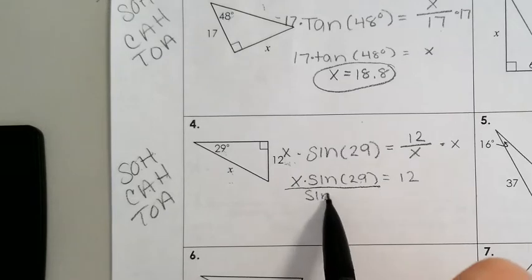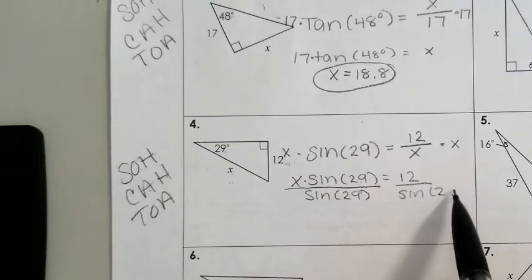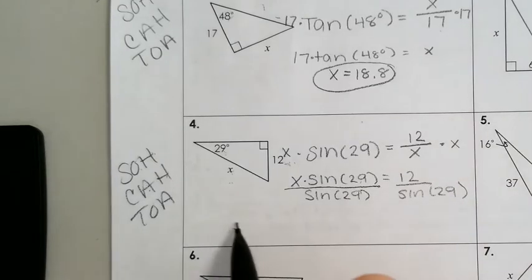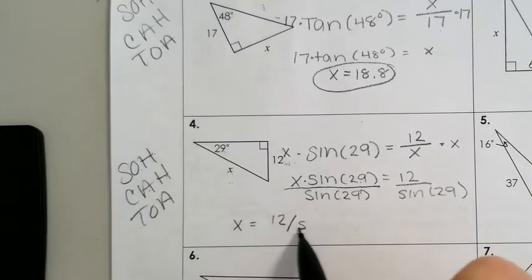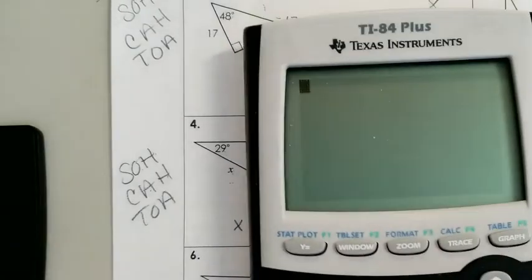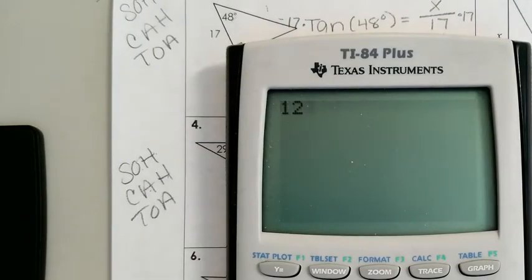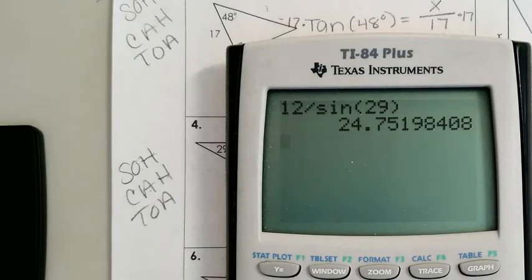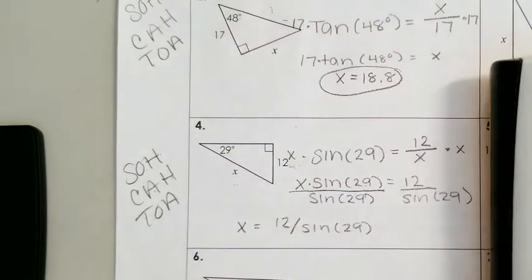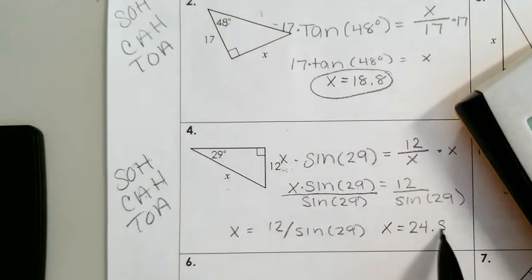Sine of 29 degrees is one whole term, so we're going to divide by sine of 29. X is equal to 12 divided by sine of 29. In your calculator, do 12 divided by sine of 29, and that means X is equal to 24.8.